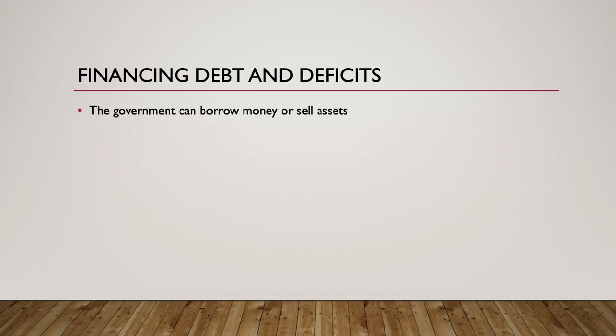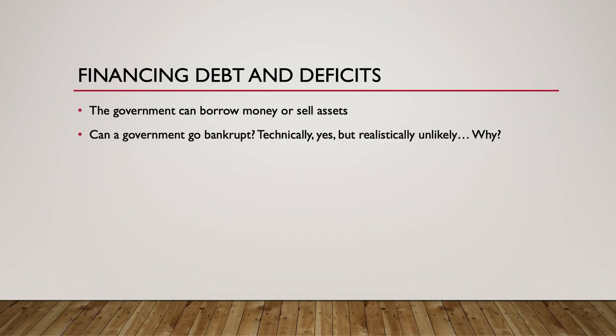How does the government finance debt and deficits? The government can borrow money or sell assets. While it is technically possible for the U.S. federal government to go bankrupt — meaning a situation in which the government cannot pay back lenders or afford to borrow more money due to extremely high interest rates on bonds — there are two things to consider which make this event unlikely. First, the Federal Reserve can buy up bonds with newly printed cash. This injects money into the money supply, which causes inflation, but also keeps interest rates low — a process called monetizing the debt.